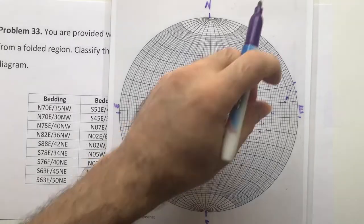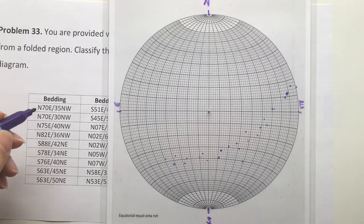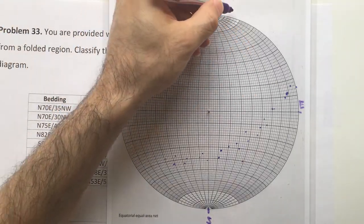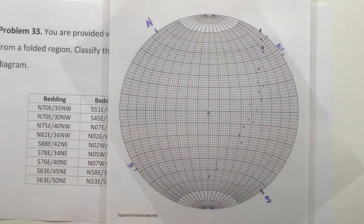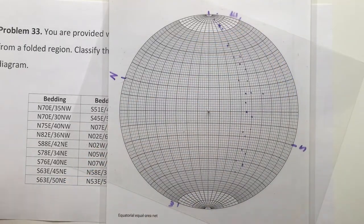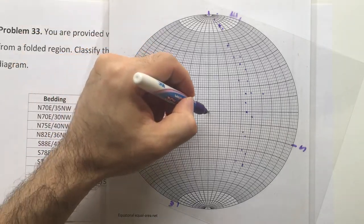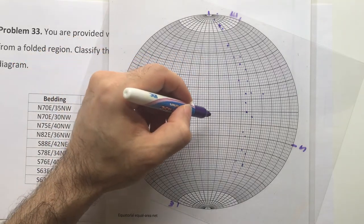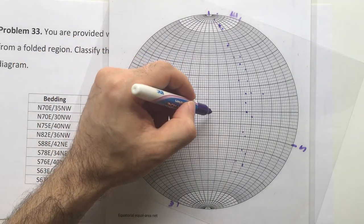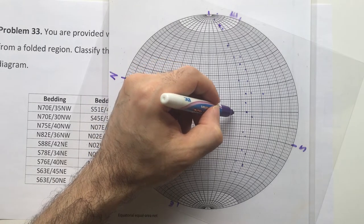The second bedding attitude is also North 70 East — you can count 20 backward to get 70 — and 30 degrees to the northwest. You get the great circle and count another 90 to get the pole, or use the shortcut: count 30 degrees from the center toward the primitive circle. That's the pole of the bedding: 10, 20, 30.